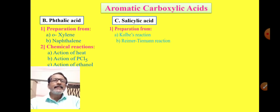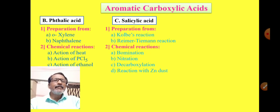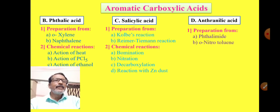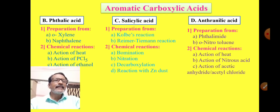For salicylic acid we will discuss preparation via the Kolbe reaction and Reimer-Tiemann reaction, and chemical reactions: bromination, nitration, decarboxylation, and reaction with zinc dust. For anthranilic acid we will cover preparation from phthalimide and from ortho-nitrotoluene, and chemical reactions: action of heat, action of nitrous acid, and action of acetic anhydride and acetyl chloride.